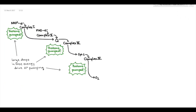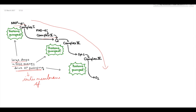Since these electron acceptors are arranged in decreasing energy concentration, there is a large drop of free energy when electrons are passed from one acceptor to the other. This energy drop is responsible for pumping protons into the intermembrane space. In the case of NADH, protons are pumped at three regions: at Complex 1, at Complex 3, and at Complex 4.